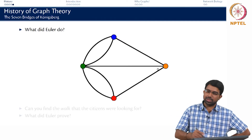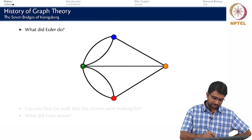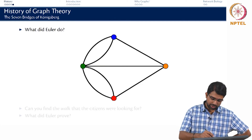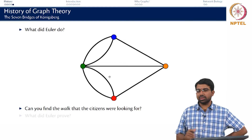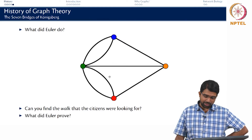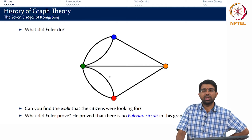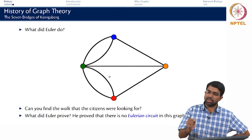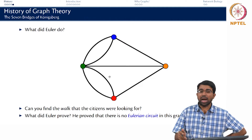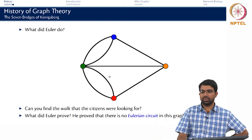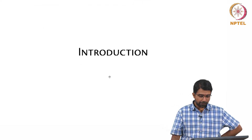Can you actually trace all these bridges and come back home starting from any point? You could start at the blue point and trace edges, but you would miss a couple, and you will find you cannot complete the walk the citizens were looking for. In fact, it is named in Euler's honour — he proved there is no Eulerian circuit in this graph. An Eulerian circuit starts at a particular node, traverses every edge and every node, and returns to the original node. If it does not return to the original node, it is called an Eulerian path.